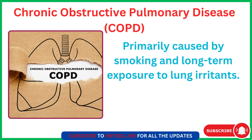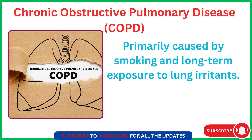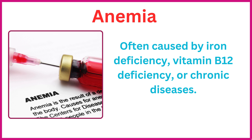Crohn's disease is a type of inflammatory bowel disease caused by immune system dysfunction. Ulcerative colitis is an inflammatory bowel disease that causes long-lasting inflammation in the digestive tract. Chronic obstructive pulmonary disease is primarily caused by smoking and long-term exposure to lung irritants. Anemia is often caused by iron deficiency, vitamin B12 deficiency, or chronic diseases.